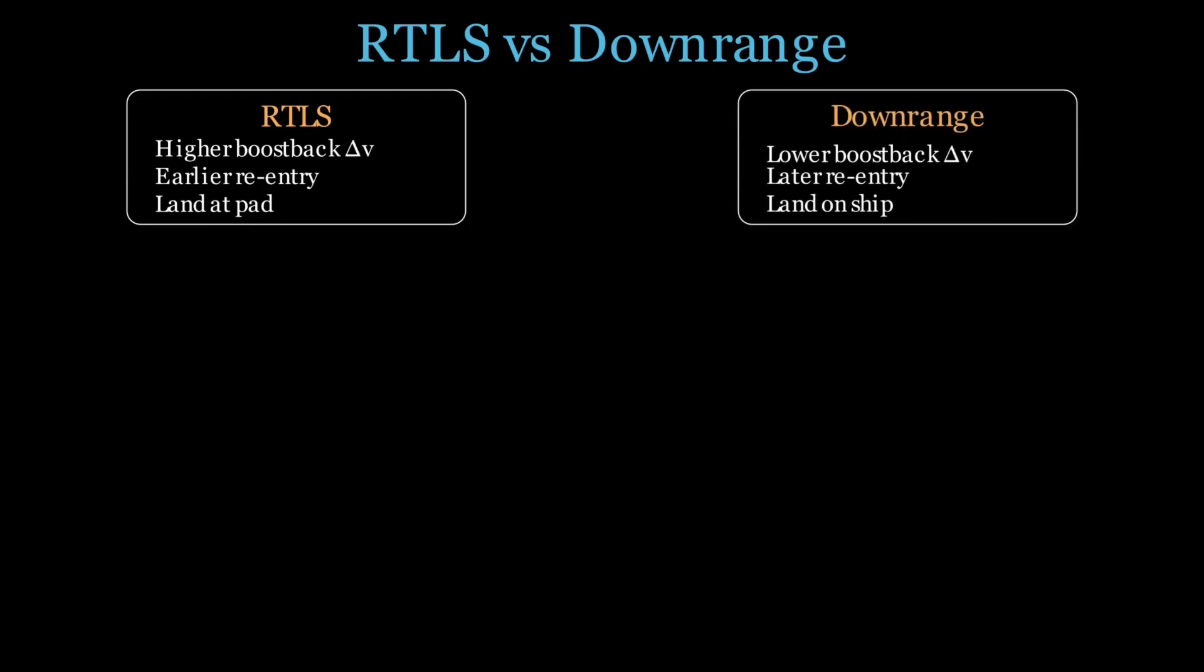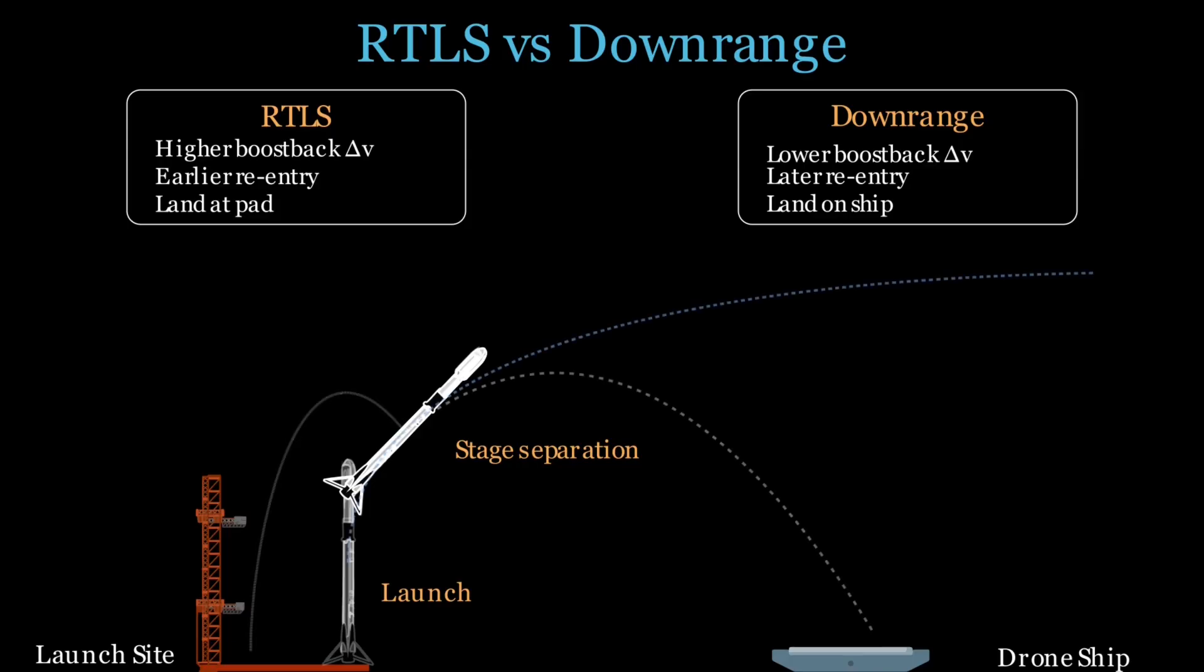Now at separation, there are two recovery options for the first stage of the rocket, either return to launch site, also called RTLS, or land downrange on a drone ship, in short DRL. Downrange recovery keeps more of that horizontal velocity, delays re-entry, and targets a drone ship placed under the ground track, and this saves propellant and preserves payload performance. RTLS, on the other hand, requires a boost back burn that counters much of the horizontal velocity picked up during ascent, and this causes additional change in velocity, brings back the stage earlier, and ends with a landing at the pad.